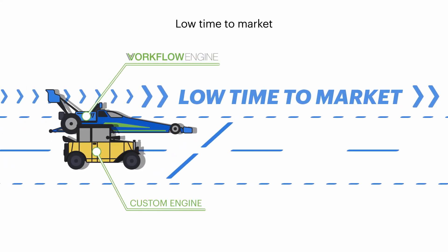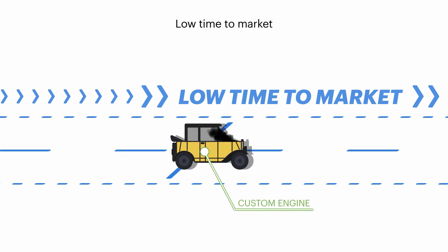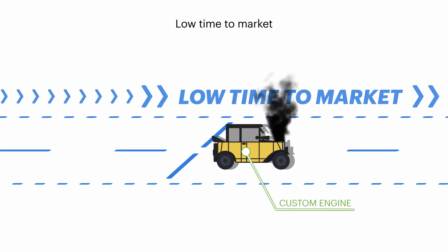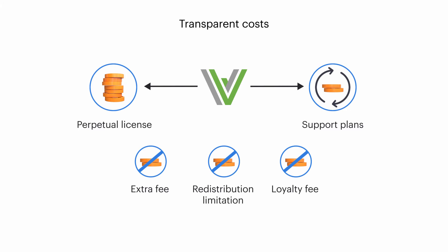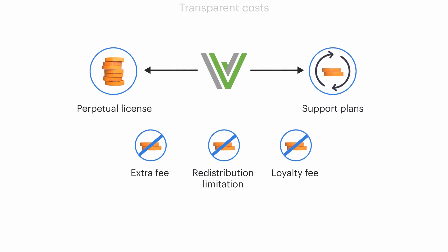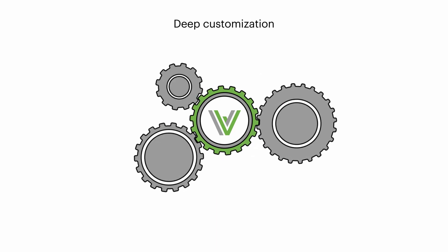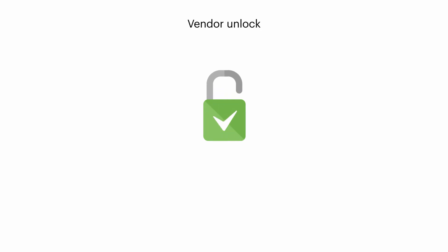Workflow Engine ensures low time to market. By purchasing it, you get to own a workflow component that is guaranteed to work as opposed to building a custom engine. We have a friendly licensing policy. We offer a perpetual license with no redistribution limitations and no loyalty fees. Access to the source code provides you with an ability to further customize Workflow Engine and guarantees that you will not be vendor locked.